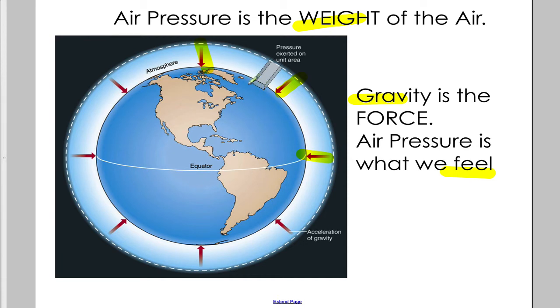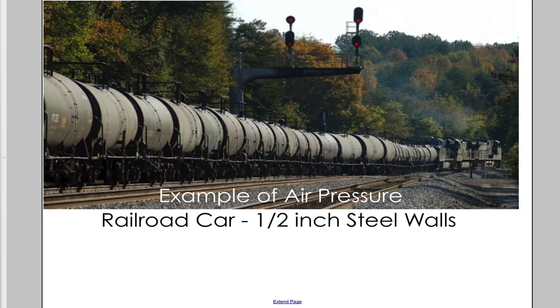We don't really feel it, and gravity pulls equally around the Earth. So for most of the Earth, the air pressure is relatively stable. It fluctuates high and low as different air masses move in and out. We'll be discussing that in detail with the rest of the weather unit.